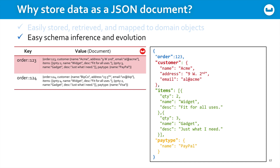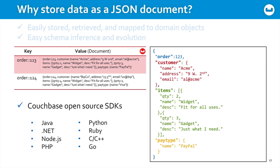The schema itself evolves over time because each document is potentially different. As new attributes are discovered and become necessary to your underlying data model, you simply add them into the documents as you accrue them. The schema is inferred based on the actual usage patterns of your data structures — you don't have a fixed schema that you're locked into at the beginning of your project. Couchbase offers open source SDKs for virtually every major programming environment, making it very easy to work with JSON documents.